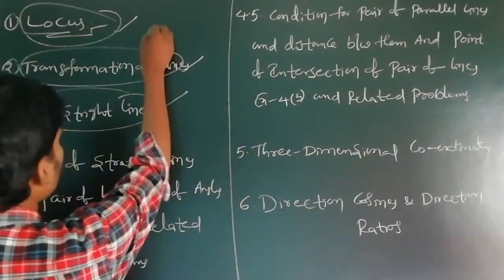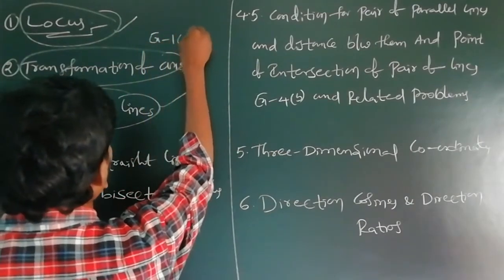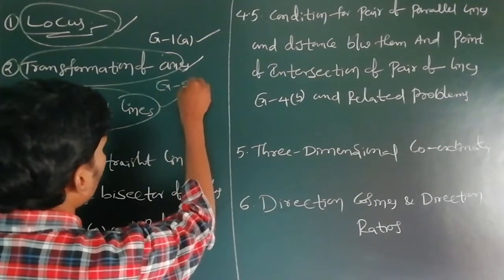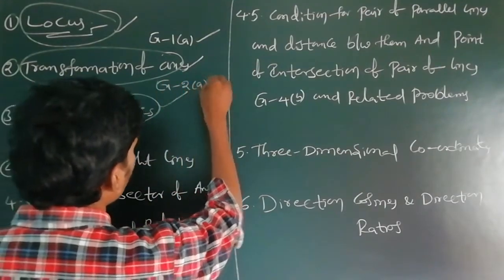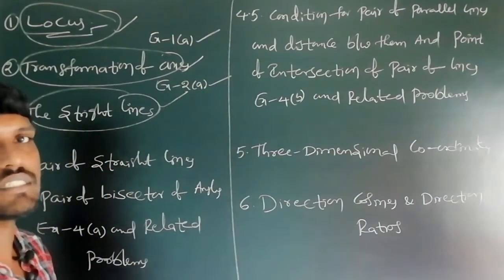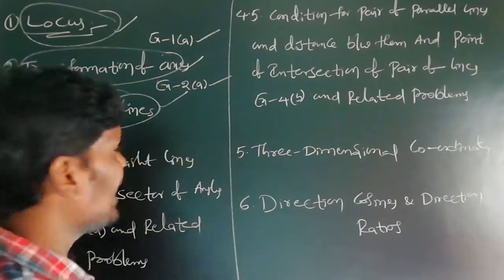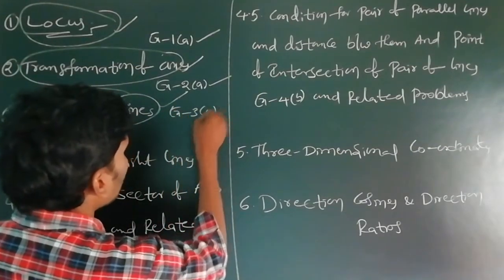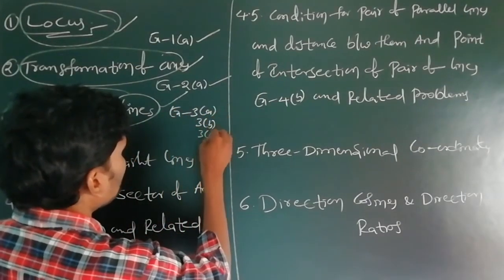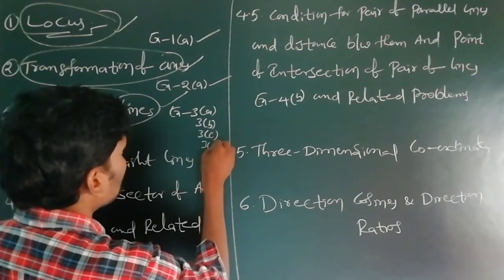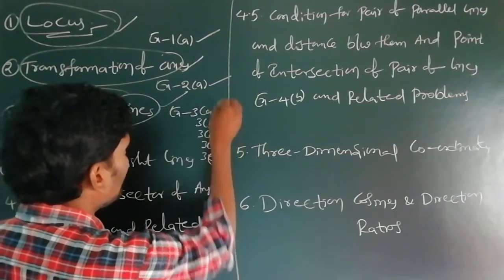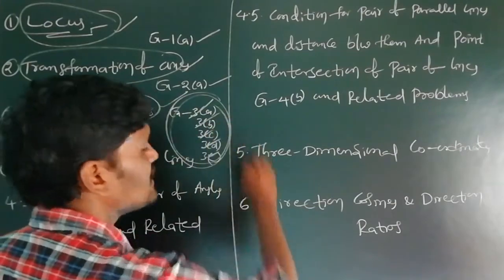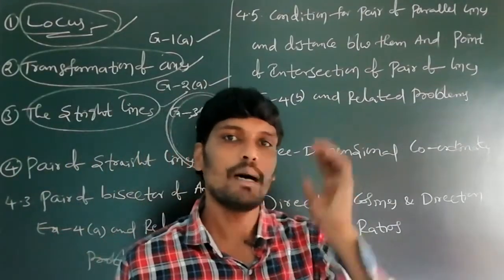In Locus, only one exercise is coming to the IP examination. In Transformation of Axes also, only one exercise is coming to the IP examination. In Straight Lines, exercises 3a, 3b, 3c, 3d, and 3e — these five exercises are coming to the IP examination.